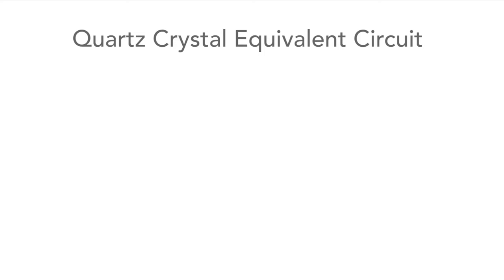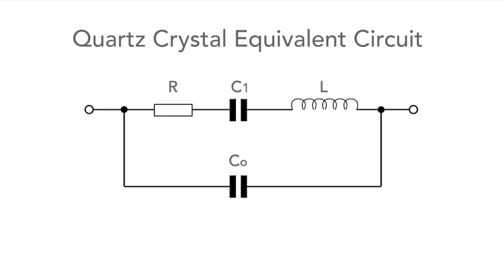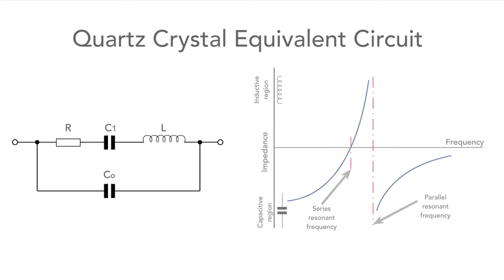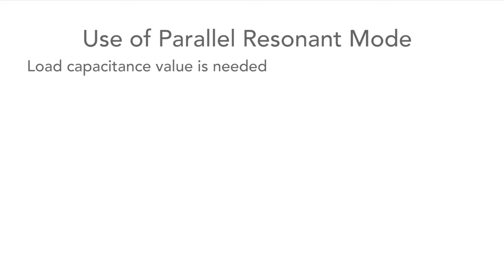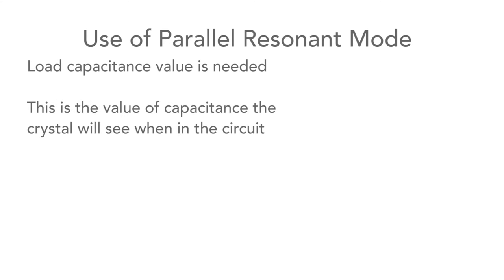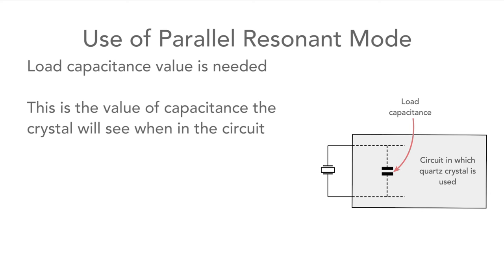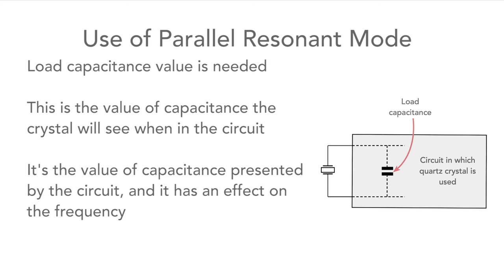It's worth taking a look at the equivalent circuit of a crystal to understand its operation a little better. It has several elements to it, and there can be two resonant modes: the series resonant mode and the parallel resonant mode. These two resonant modes are generally just a few kilohertz apart, or a few percent apart, and when ordering crystals it's necessary to select which one is required. When using the parallel resonant mode a load capacitor value is needed — this is the capacitance the crystal will see when operating in the circuit, and it will have an effect on the resonant frequency. It's the amount of circuit capacitance that will act in parallel with the crystal; for example, figures of 30 pF or 50 pF are quite common.